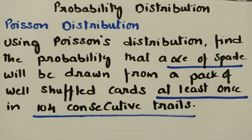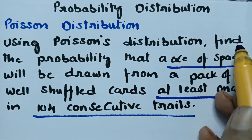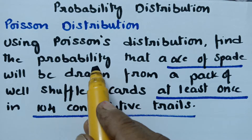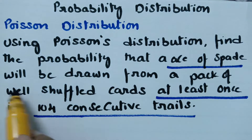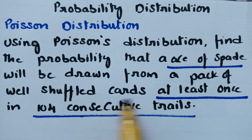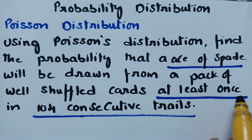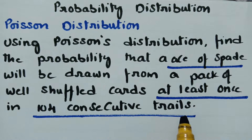This video is on Poisson distribution. In today's video we have to use Poisson distribution to find the probability that an ace of spades will be drawn from a pack of well shuffled cards at least once in 104 consecutive trials.